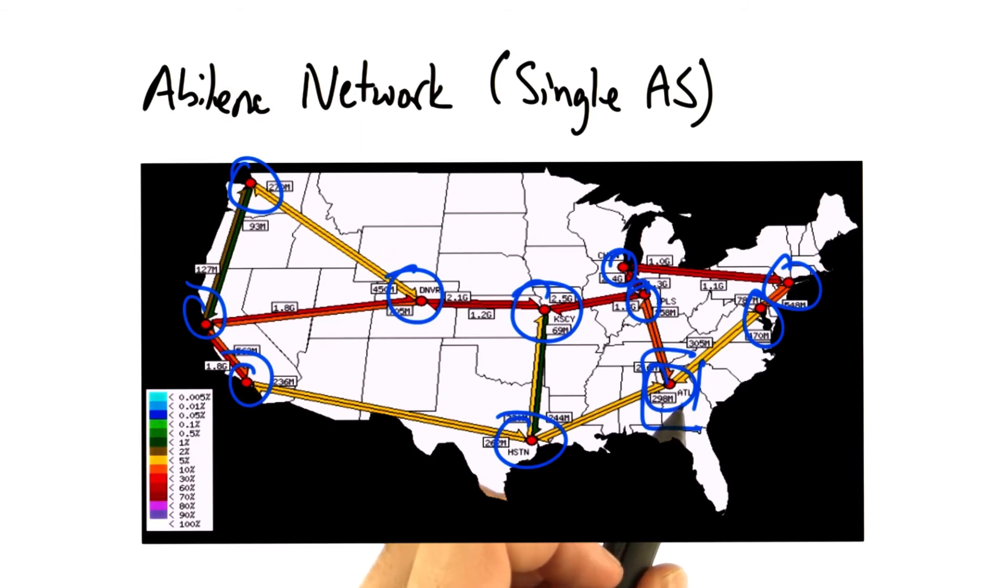Georgia Tech is an autonomous system that connects at the Atlanta POP of the Abilene network.